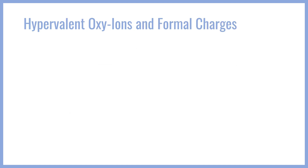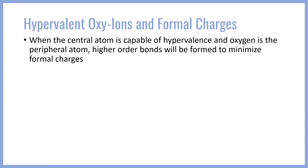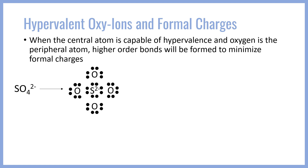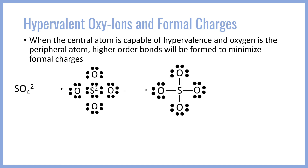Some funny things happen when the central atom is capable of hypervalence. Specifically, when the central atom is capable of hypervalence and we have oxygen in the periphery, we will form oxy ions with very high-order bonds all around, forming many double bonds to the central atom to minimize formal charges. For example, if we have SO4 2-, we'll put our sulfur atom at the center with those two extra electrons to have eight valence electrons total. The oxygen atoms will each steal one lone pair from the sulfur to fill its octet, forming four single bonds.